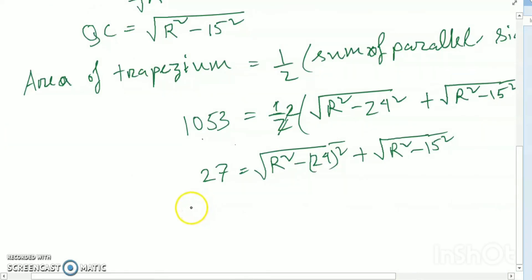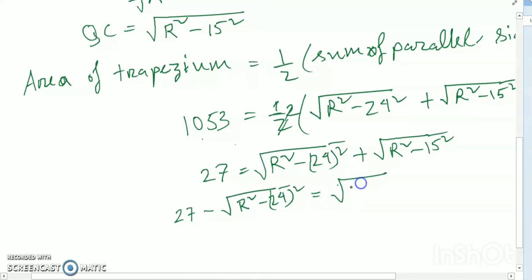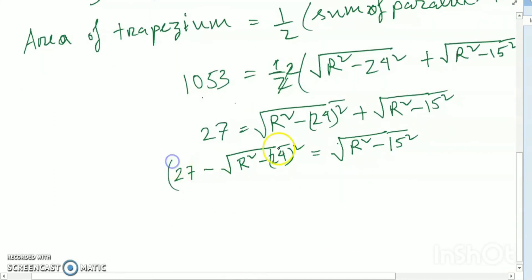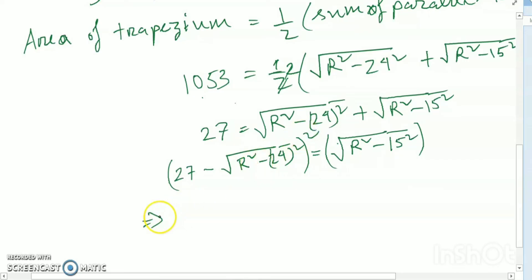To solve √(r² − 576) + √(r² − 225) = 27, we rearrange: √(r² − 576) = 27 − √(r² − 225), then square both sides. 27² = 729.